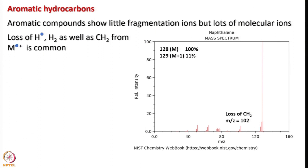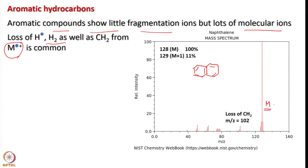Now let us look into aromatic hydrocarbons. Aromatic hydrocarbons show little fragmentation but many molecular ions due to loss of H radical, and one can also see loss of H2 as well as CH2 from aromatic compounds. Looking at the mass spectrum of naphthalene, molecular weight 128, loss of CH2 continues, and loss of H gives fragments — you can also see some sub-fragments.